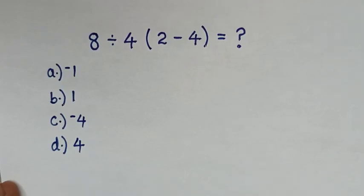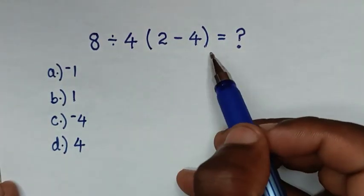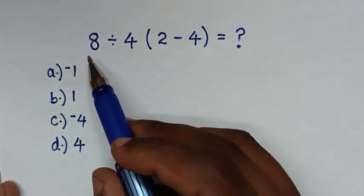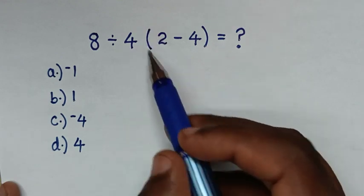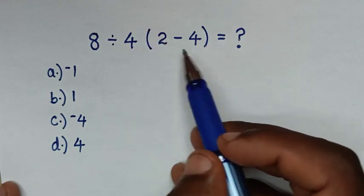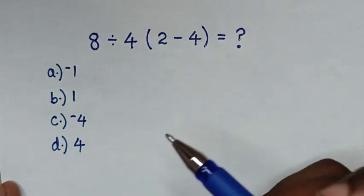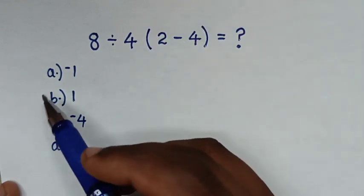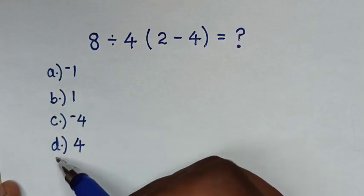Hello, you are welcome to solve this math problem, which is 8 divided by 4 bracket 2 minus 4 bracket. I will select the answer in A, B, C, or D.